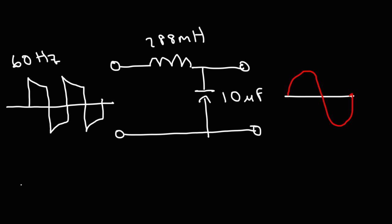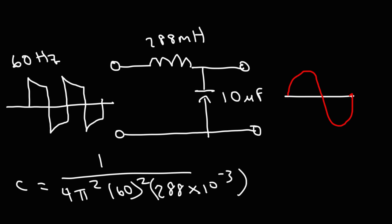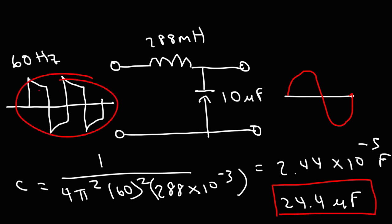Now when calculating the capacitance I needed using this frequency, the actual value was different than what I have here. So let's go ahead and plug this in. So 1 over 4π² times 60² times 288 times 10 to the -3. So the theoretical capacitance that I needed was 2.44 × 10⁻⁵ farads. If you divide that by 10 to the -6, this is equivalent to a 24.4 microfarad capacitor.